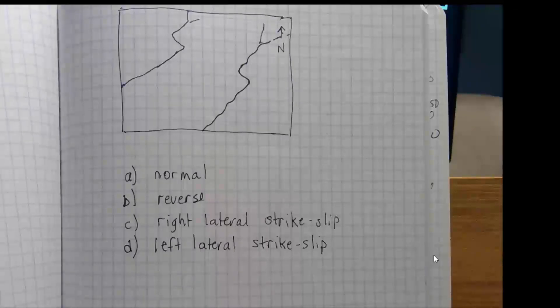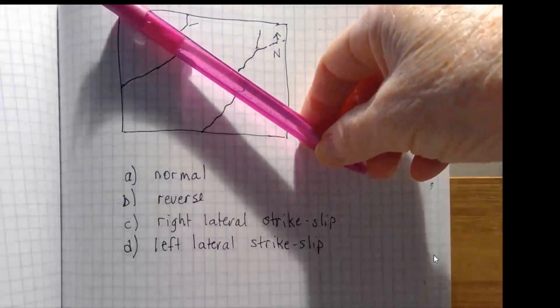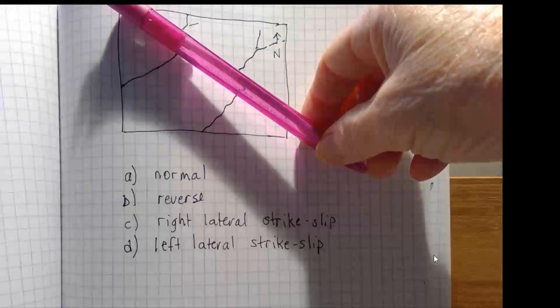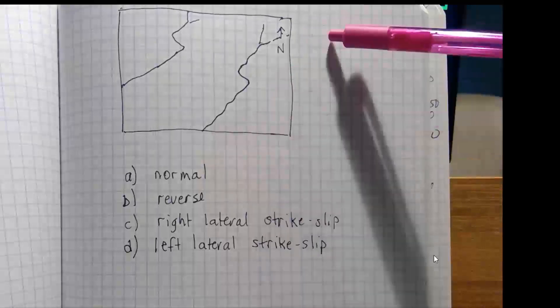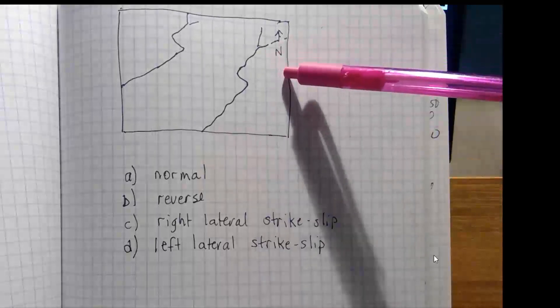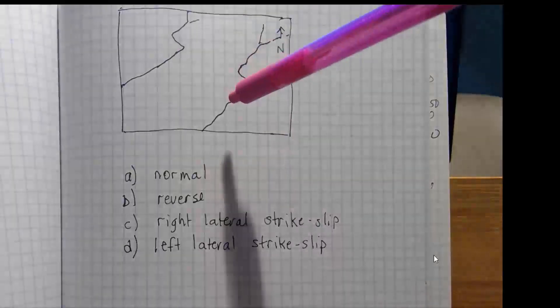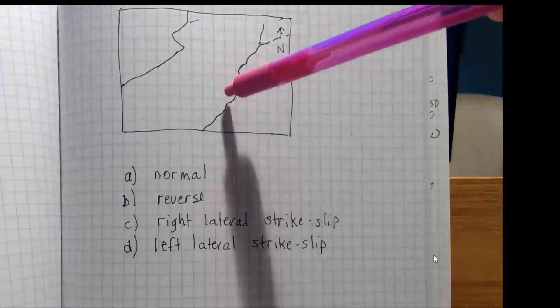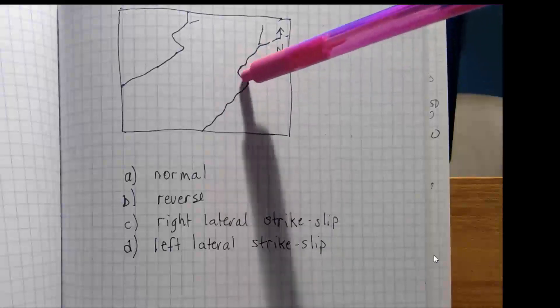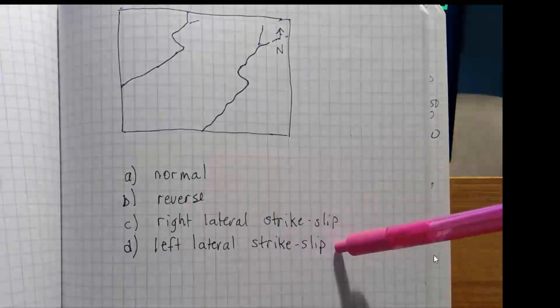I hope you said a left lateral strike slip fault. For this question we have to realize our fault runs along there. The streams are offset because this part of the region is being pushed this way to the southeast. This part of the region up here is being pushed to the northwest. If we stand on one side of our fault and look across the fault, we see that the other side has shifted to our left, and that's what makes it a left lateral strike slip fault.